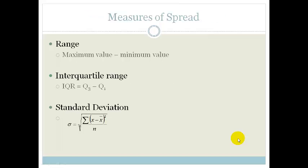Your range is your maximum value minus your minimum value. The interquartile range is your quartile 3 minus your quartile 1, and we'll talk about those in a minute. And your standard deviation is given by the square root of the sum of x minus the average x over n. And by the way, that's all squared.